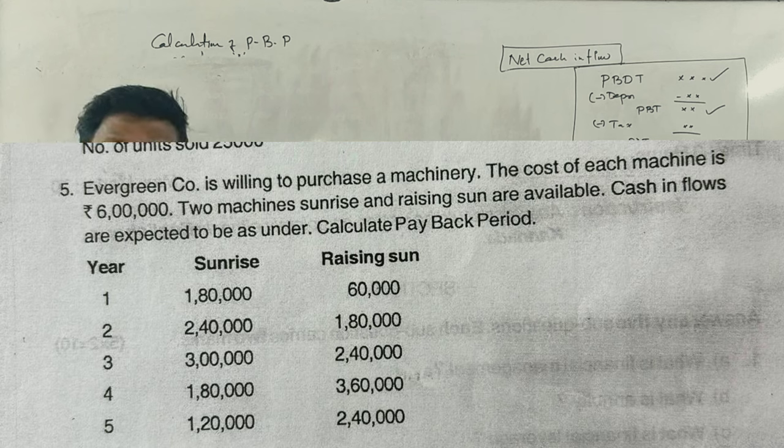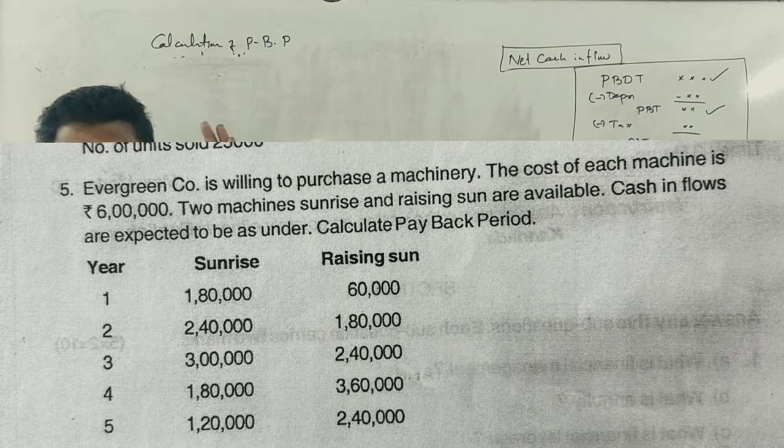Evergreen Company is willing to purchase machinery. The cost of each machine is 6 lakh rupees. Two machines, Sunrise and Rising Sun, are available. Cash inflows are expected to be as under. Calculate payback period.